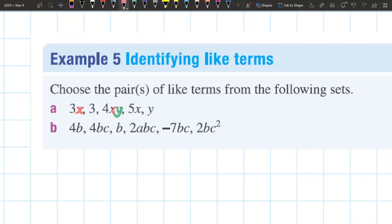Next one, 5x. I have an x here. Do I have the same pronumeral factors as my 3x? Yes. So here I've got one set of like terms: 3x and 5x.